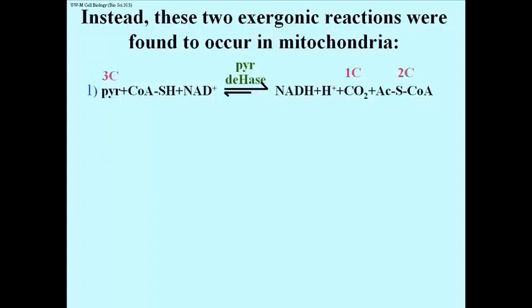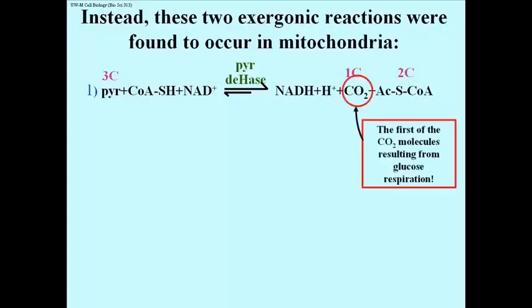The electron carrier that grabs the electrons away from pyruvate is NAD+, and it becomes NADH. The other thing to point out is that in this process, the first of the carbon dioxide molecules that are to result from glucose oxidation has now come off. Since there were two pyruvates per glucose, two of the carbon dioxide molecules have been accounted for.